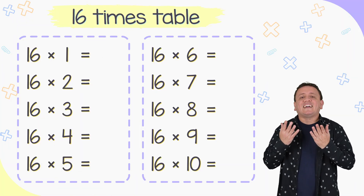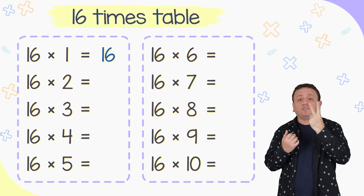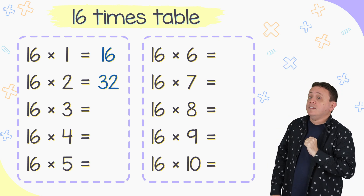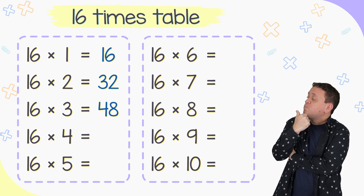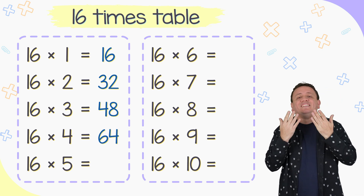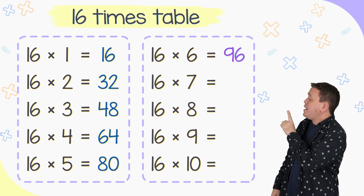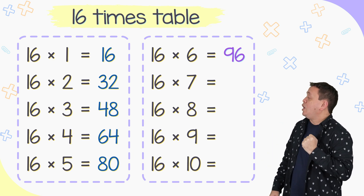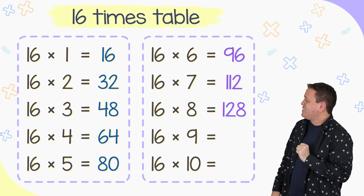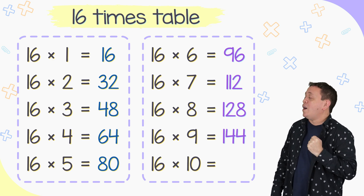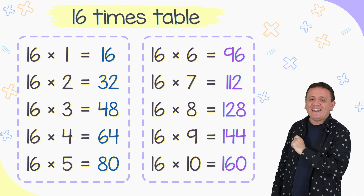Let's take a look at the 16 times table. 16 times 1 is equal to 16. 16 times 2 equals 32. 16 times 3 equals 48. 16 times 4 equals 64. 16 times 5 equals 80. Let's jump to the next column. 16 times 6 is equal to 96. 16 times 7 equals 112. 16 times 8 equals 128. 16 times 9 equals 144. The last one: 16 times 10 equals 160.